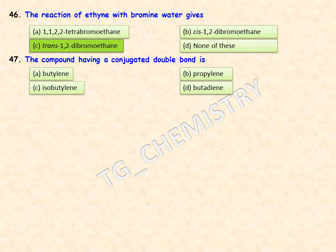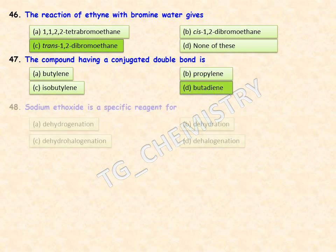The compound having a conjugated double bond is which of the following? A conjugated diene has one carbon between double bonds, different from cumulated dienes. Options are butylene, propylene, isobutylene, or butadiene. Butadiene is the right answer — option D.